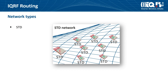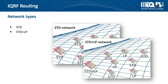STD network types are faster than STD plus LP network type thanks to the shorter time slot length, but they don't support LP devices. The STD plus LP network type is about 2 times slower because the LP packet is longer. Types of networks were introduced in the third tutorial for manufacturers, software and settings of IQRF transceivers.